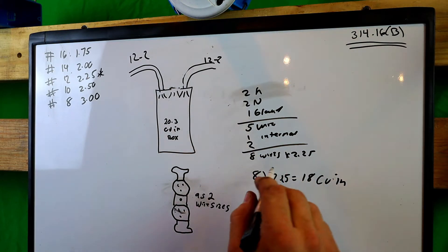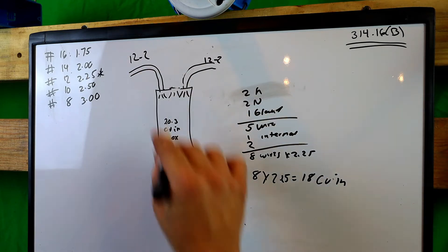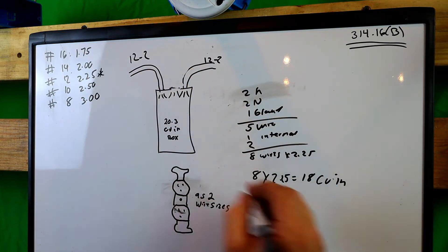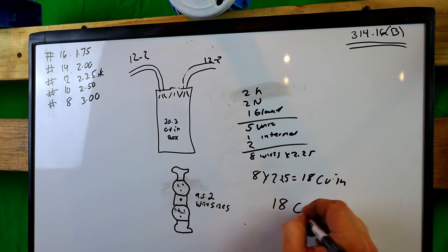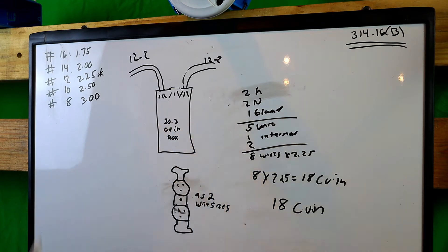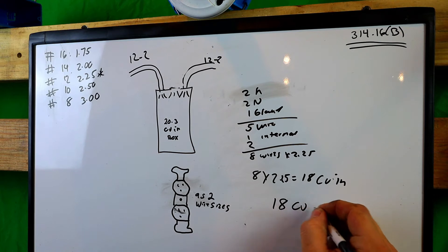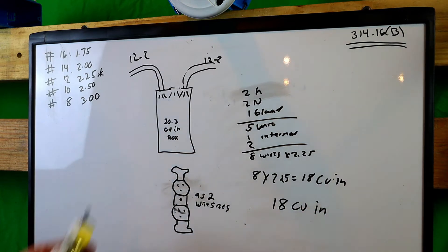All right. Here's where we're going to start. So we know that our box fill with the wires we have in it and the yoke receptacle, we have at 18 cubic inches. Now we know that our box in question is 20.3 cubic inches. So we are completely in line with this. That looks like it's Koonin. Let me, let me fix that. Cubic inches. There we go.